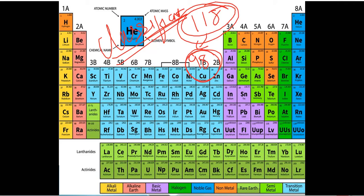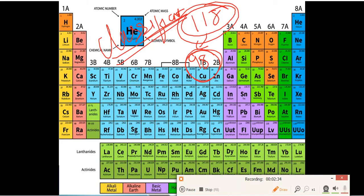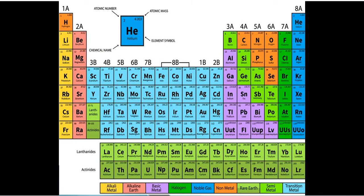Just like in a shop where different soaps are placed on different shelves so you can easily pick what you need, similarly in the periodic table, elements are grouped according to their similarities and differences. If we know the properties of one element in a group, we can predict the properties of the other elements in that group.